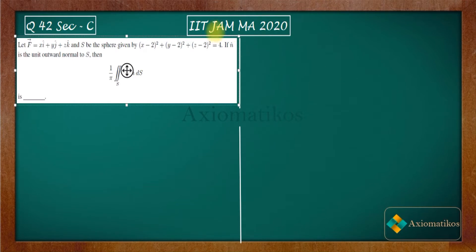Hello dear students, welcome to Axiomatics. This video is part of the solution series for IIT JAM 2020 and we are here with its problem 42. So it's a problem from section C, a numerical answer type.